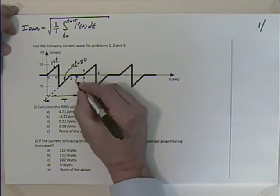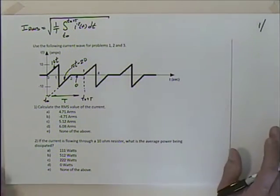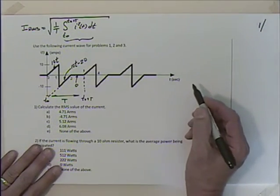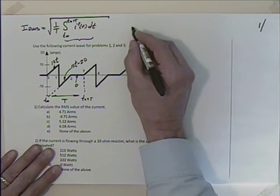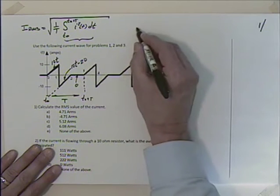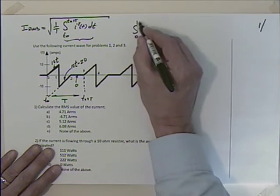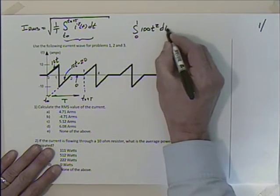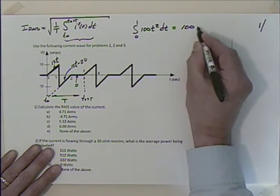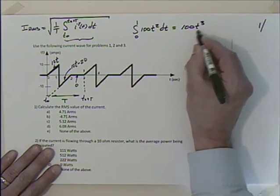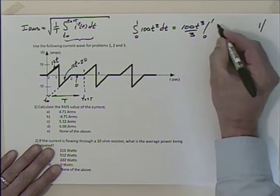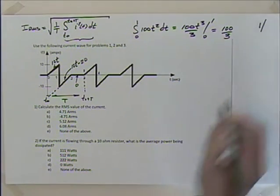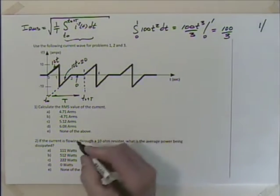The last segment is 0. So I'll break the integral into pieces. The first piece is the integral from 0 to 1 of (10t)² dt = integral of 100t² dt, which gives 100t³/3 evaluated from 0 to 1, equaling 100/3 = 33.33.